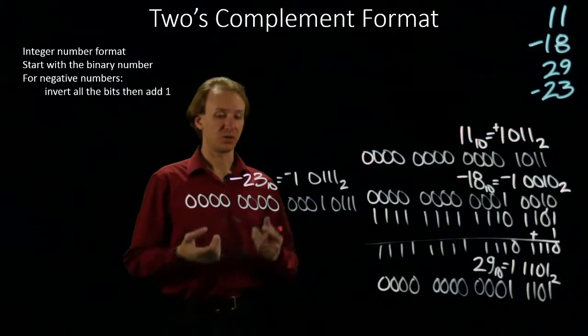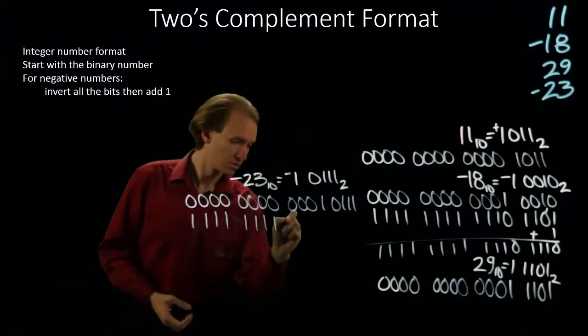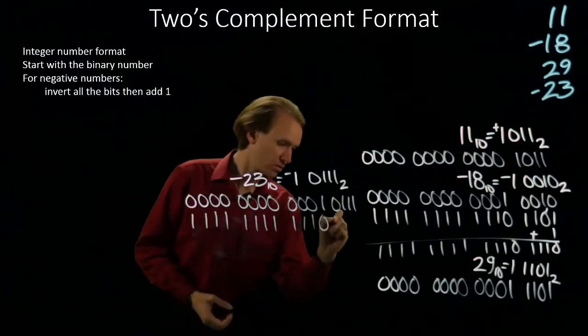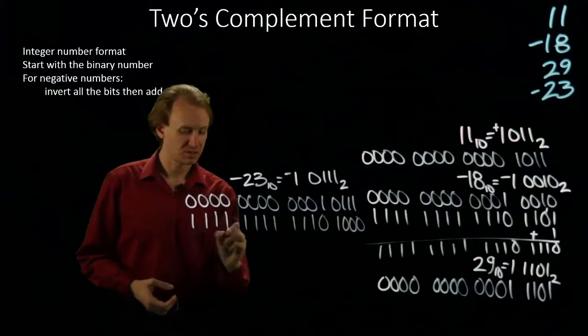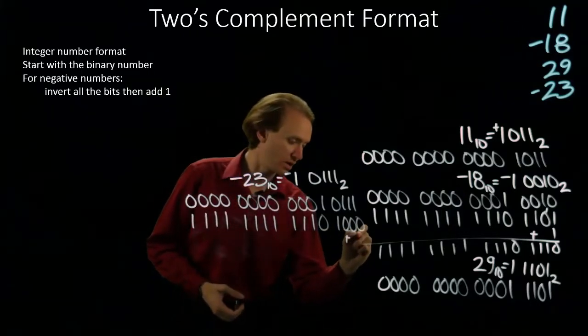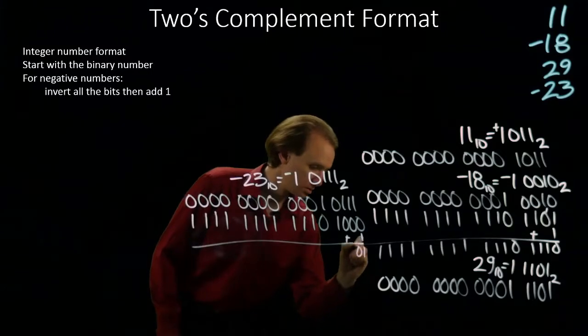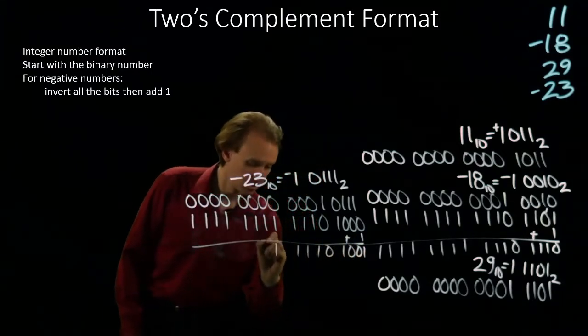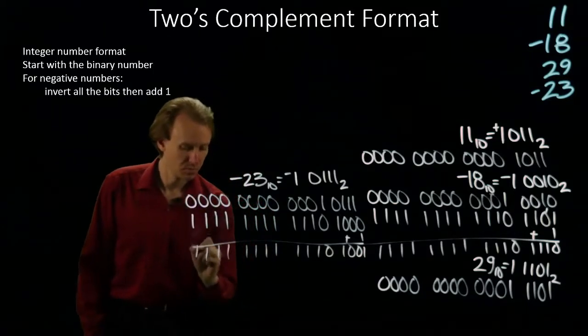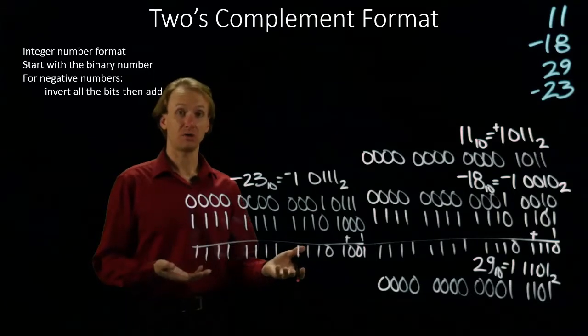So I flipped all of the bits, and now I will add 1 to it. So there is negative 23 in two's complement.